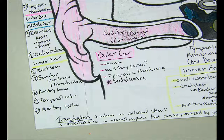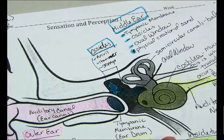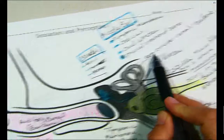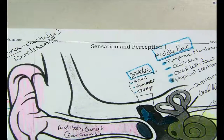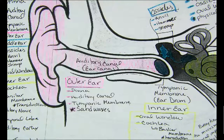The tympanic membrane is part of both the outer and the middle ear — it's the overlap, the end of the outer and the start of the middle. The semicircular canals are for balance — that's all you need to know for them.